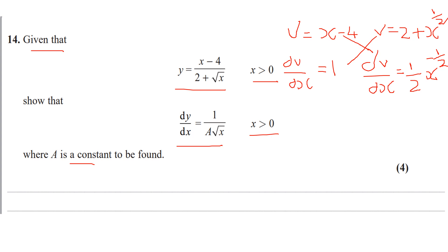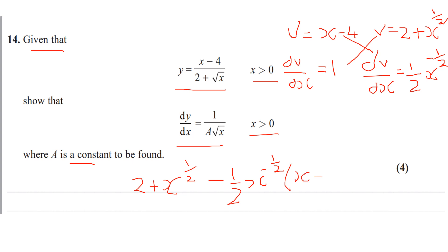So v du/dx: we'll have 2 plus x to the power of a half, subtract a half x to the minus half, times by x minus 4. So we're going to expand this single bracket in a second. All over v squared, so it'll be 2 plus root x, all squared.